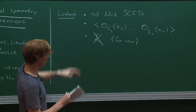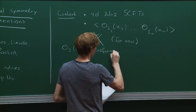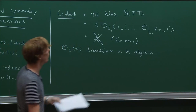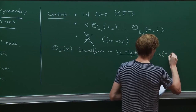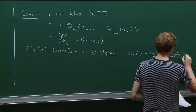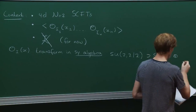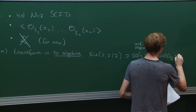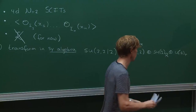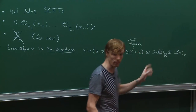The first thing to realize is that local operators transform under the symmetry algebra. The associated states form representations of the symmetry algebra of four-dimensional N=2 superconformal theories. This algebra is SU(2,2|2). Its maximal bosonic subalgebra contains the conformal algebra in four dimensions, an SU(2) R-symmetry, and a U(1) R-symmetry. I'll use capital R for the SU(2) labels and little r for the U(1) labels.